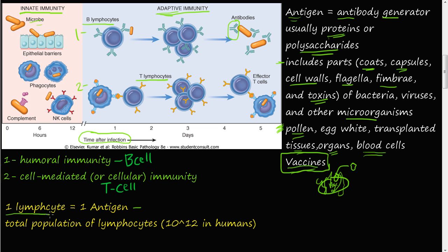Something fascinating about lymphocytes and antigens is that one lymphocyte only recognizes one type of antigen. Each lymphocyte has receptors for only one specific antigen. You might wonder how our bodies can manage this given the vast number of bugs out there, but the total population of lymphocytes in our bodies is 10 to the 12th power — a very large number — giving our body the capacity to recognize a huge variety of different antigens.